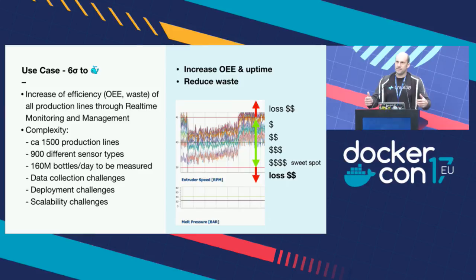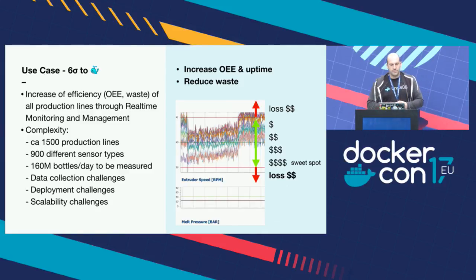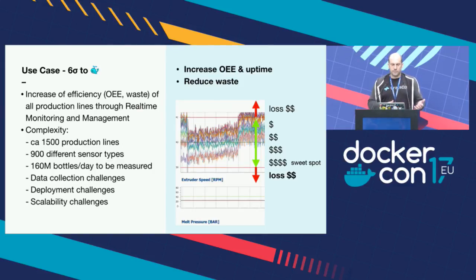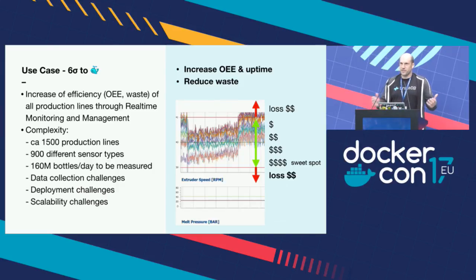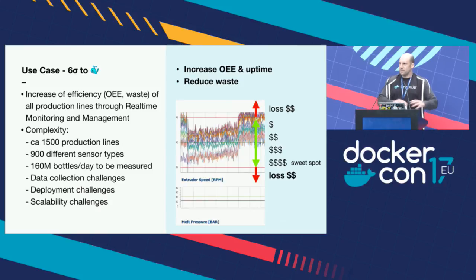They knew that to make the next step they need to use digital transformation, and I'm going to show how Docker helped them. What they do is really complex — they have about 1,500 production lines and up to 900 different sensor types, producing 160 million bottles each day. This means there are a lot of data collection challenges, deployment challenges because their plants are all over the globe, and scalability challenges because scaling from one plant to a global level is really a challenge.